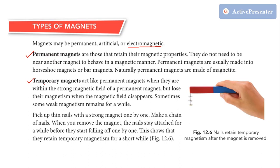Let's talk about permanent magnets first. Permanent magnets are those that retain their magnetic properties — their magnetic property is permanent, it will not lose its magnetism. They also do not need to be near another magnet to behave in a magnetic manner.